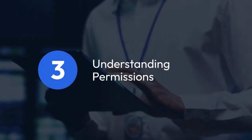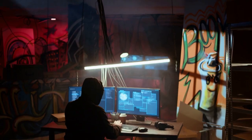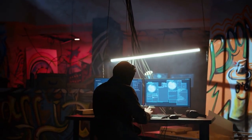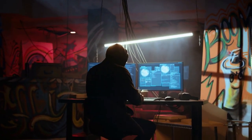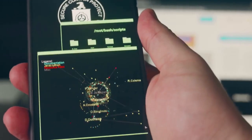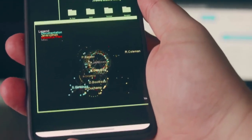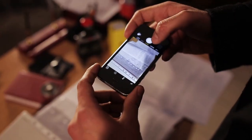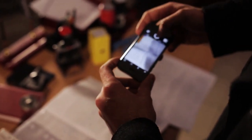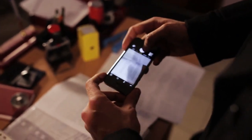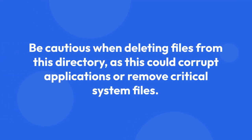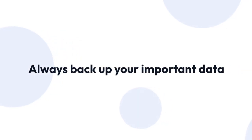Three: understanding permissions. Remember that you may not have access to all files and folders within /storage/emulated/0/. Many apps store data in private directories, protecting user privacy. Attempting to access these files without proper authorization can lead to errors or even security vulnerabilities. Also, be cautious when deleting files from this directory, as this could potentially corrupt applications or remove critical system files. Always back up your important data before making any significant changes.